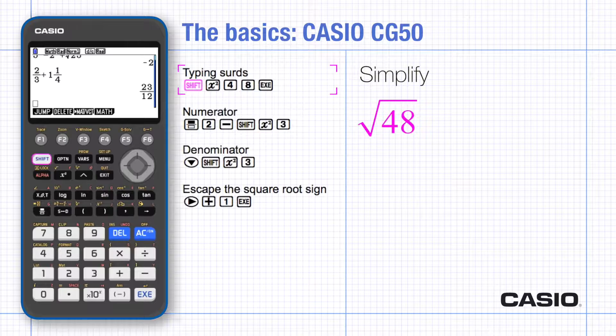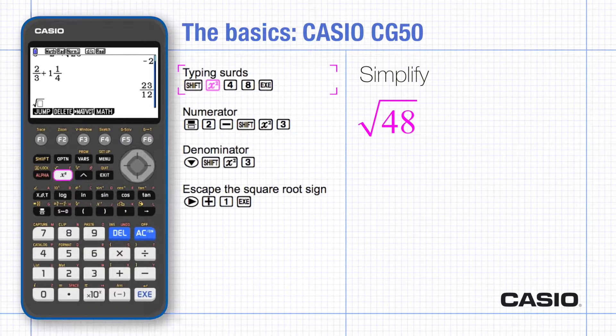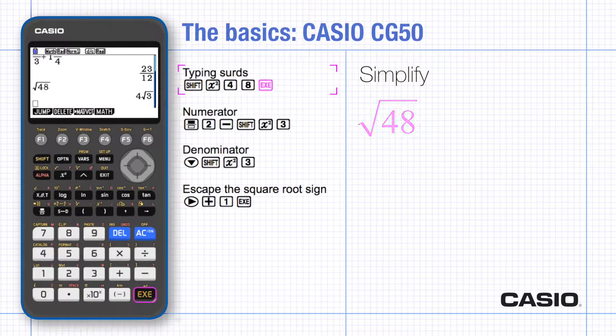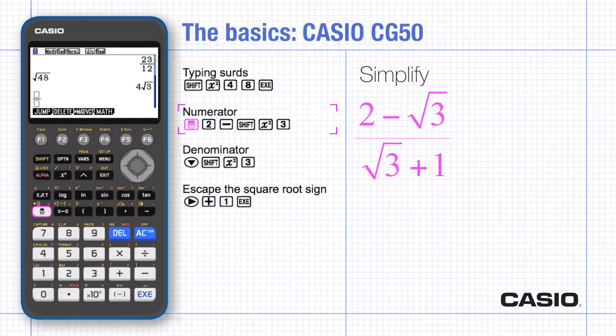To simplify this sd type root 48 and execute. To simplify the fraction use the fraction key and type the numerator.